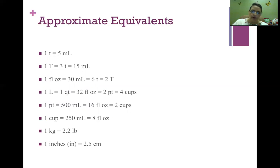Approximate equivalences. This is something that you simply need to memorize. 1 teaspoon is equal to 5 mils. 1 tablespoon equals 3 teaspoons equals 15 mils. 1 fluid ounce equals 30 mils equals 6 teaspoons equals 2 tablespoons. 1 liter equals 1 quart equals 32 fluid ounces equals 2 pints equals 4 cups. 1 pint equals 500 mils equals 16 fluid ounces equals 2 cups. 1 cup equals 250 mils equals 8 fluid ounces. This is an important one: 1 kilogram equals 2.2 pounds. 1 inch equals 2.5 centimeters.